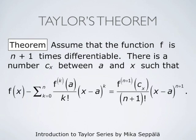Brooke Taylor's claim to fame is his theorem that allows us to estimate the error that we make when we approximate the value of a function f with the nth partial sum of its Taylor series at x equals a. That error is f of x minus summation k from 0 to n of the kth derivative of f at a divided by k factorial times x minus a to the power k. Taylor's theorem states that this error equals the n plus first derivative of f evaluated at some point cx between x and a, divided by n plus 1 factorial times x minus a to the power n plus 1, assuming f is n plus 1 times differentiable.